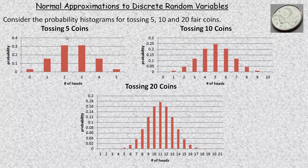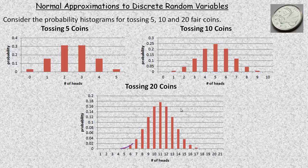These are the histograms for tossing 5 fair coins, 10 fair coins, and 20 fair coins. For 5 it's very symmetrical about some middle value. The 10 is even more so — it certainly looks very bell-shaped like a normal curve, and even more so the 20. We can draw a very nice bell-shaped curve, very much like a normal. So we should be able to approximate probabilities here with the normal curve because it has the same kind of shape.